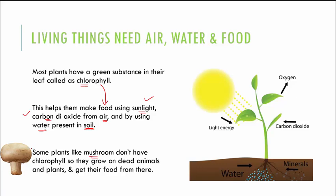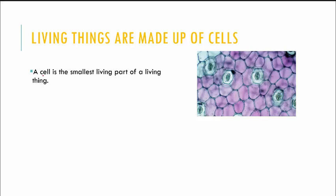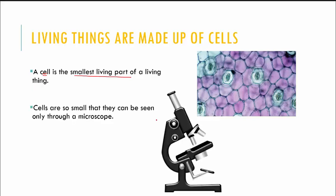Let us move on to the next one, which is that living things are all made up of cells. What is a cell? A cell is the smallest living part of a living thing — that is, even in you, even in me, even in your neighbour's cat or dog, the cell is the smallest living part of it. Now these cells are very, very small and they cannot be seen through your naked eyes.